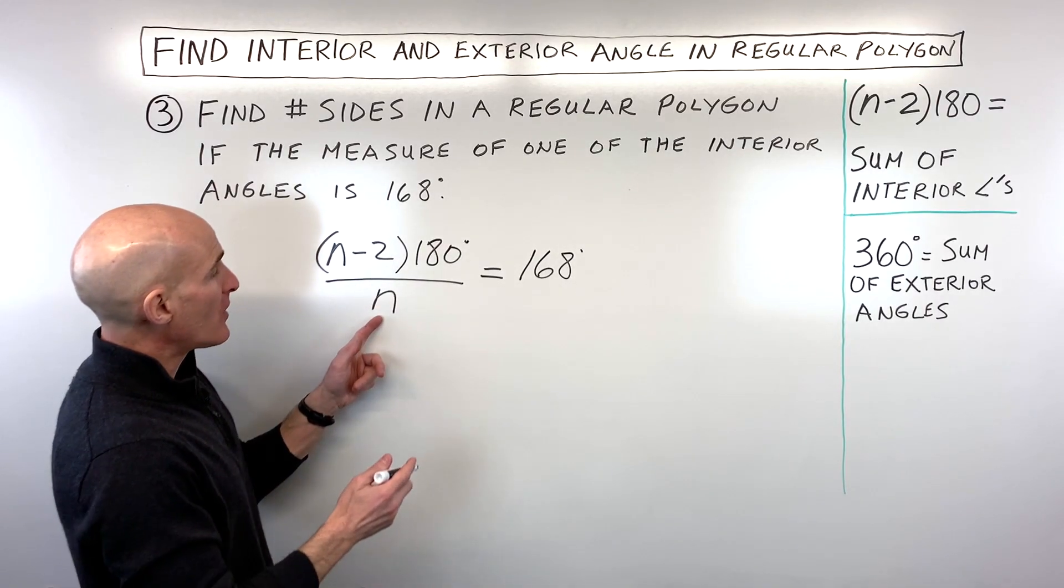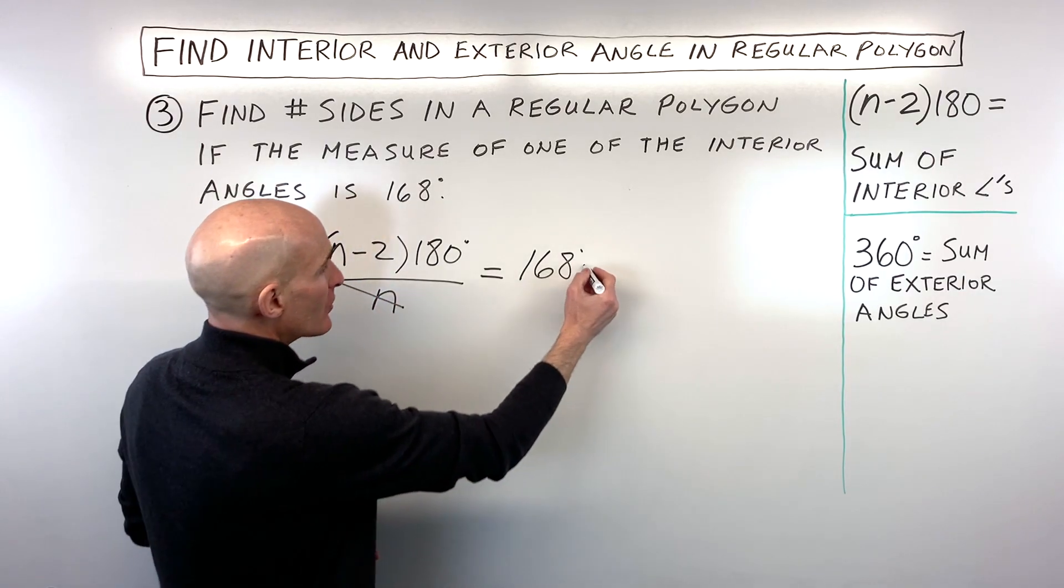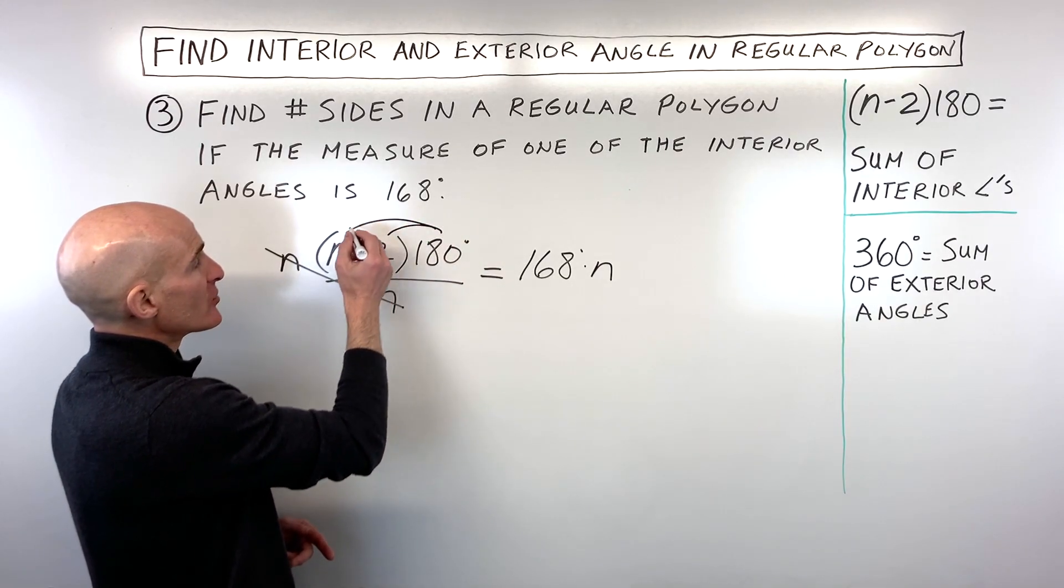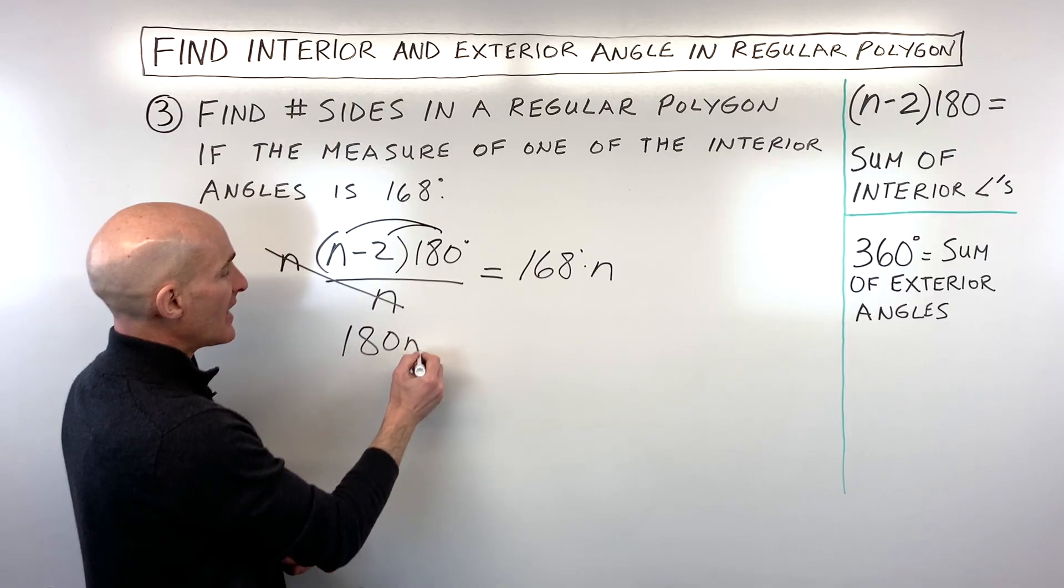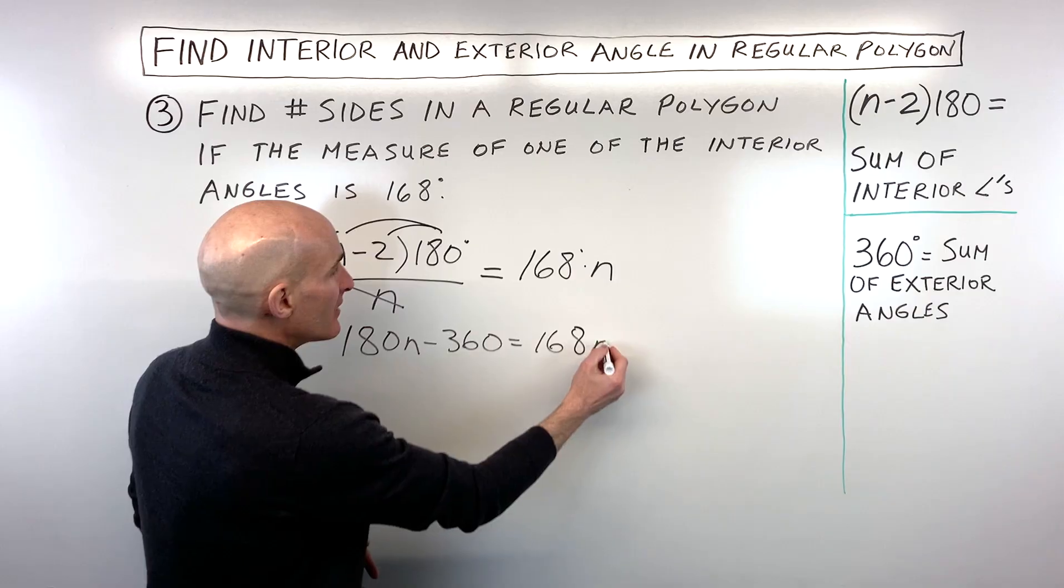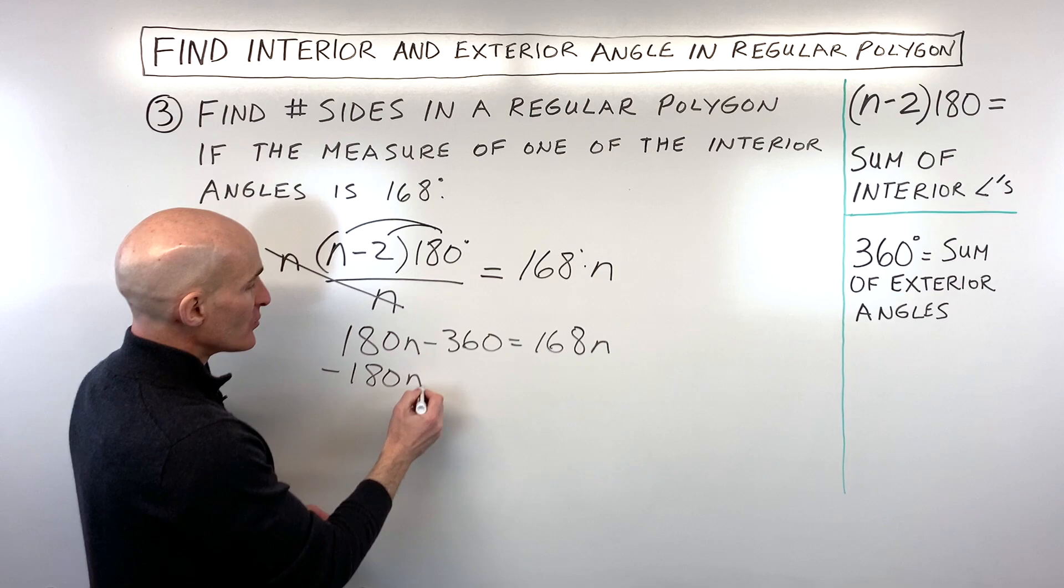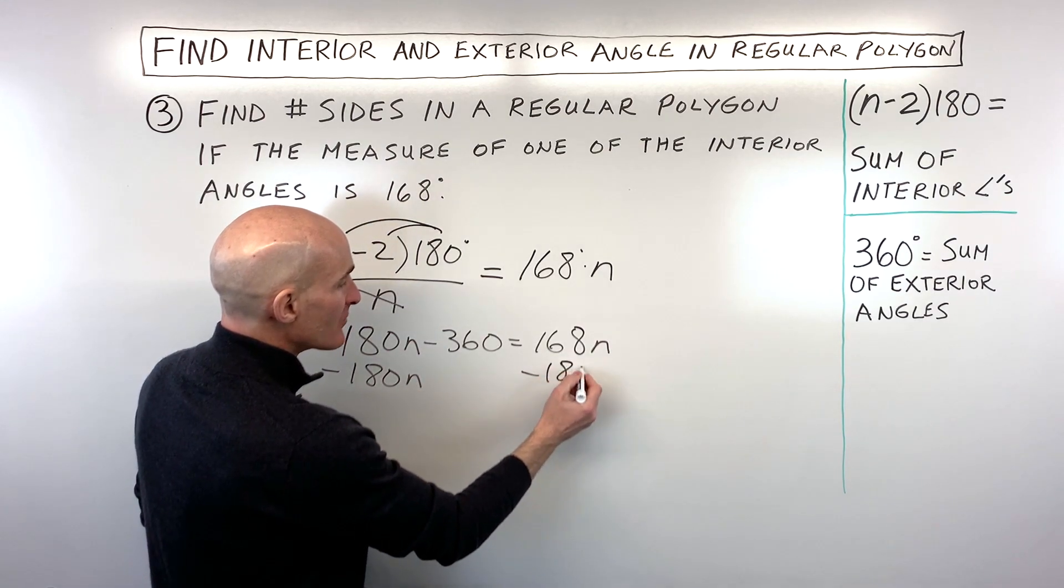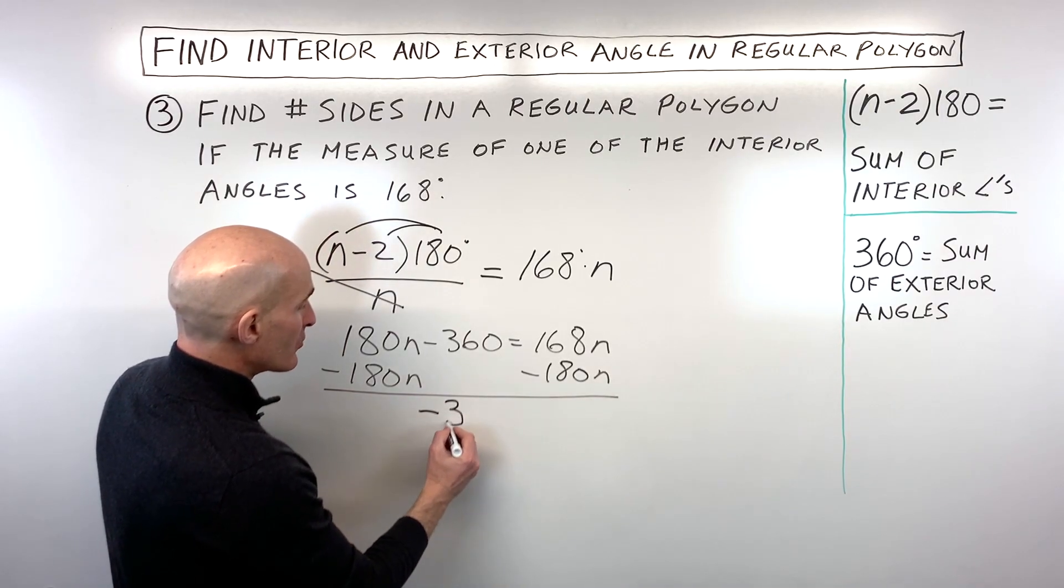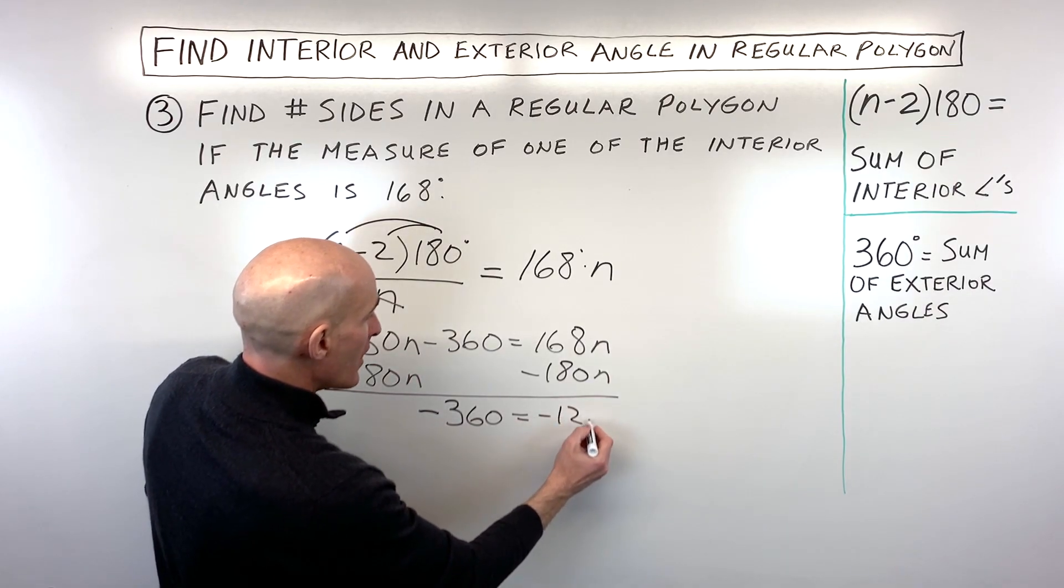What I would do is I would multiply both sides by n, that way the numerator and denominator here cancel. Whatever you do to the left, you want to do to the right. Then what I would do is I would distribute this 180 degrees into the parentheses, so that gives us 180n minus 360 is equal to 168n. Then I would subtract 180n—want to get the variables on one side, numbers on the other, it's just a basic algebra equation. And so you can see we're getting negative 360 is equal to negative 12n.